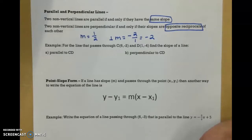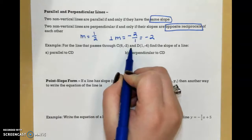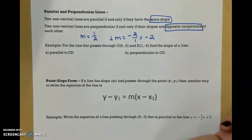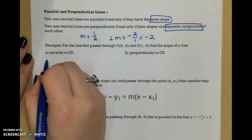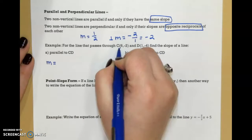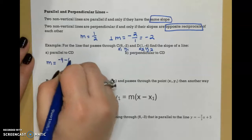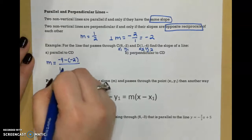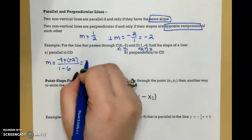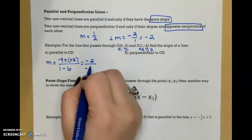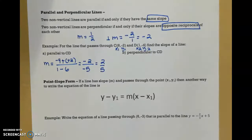For parallel slope, it just stays the same. So let's look at this example. I want to find, for the line that passes through C at 6, negative 2, and D at 1, negative 4, the slope of a line that would be parallel to CD. Parallel slope is the same, so I need to find the slope of CD. Using my slope equation, that becomes negative 4 plus 2 over negative 5, and a negative over a negative is positive, so that's positive 2 over 5.